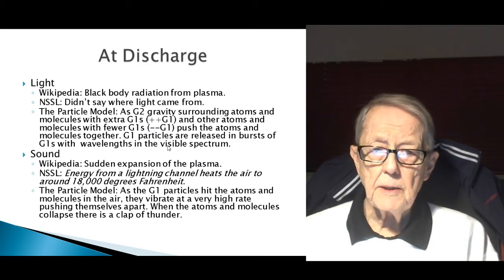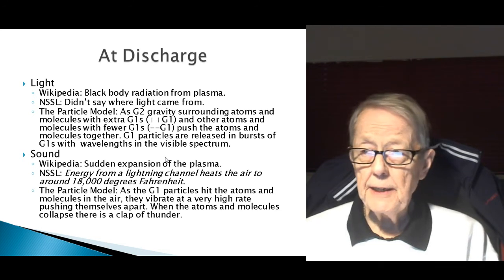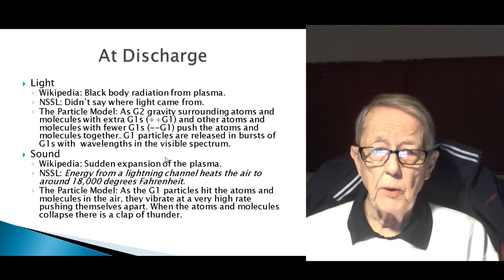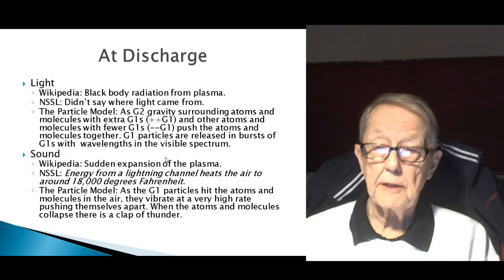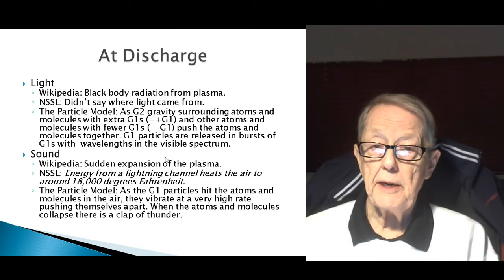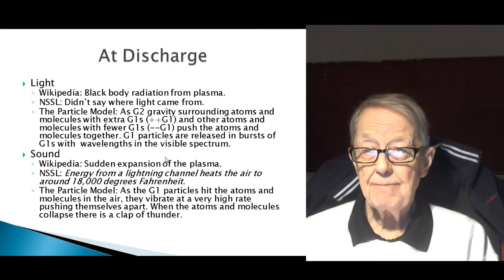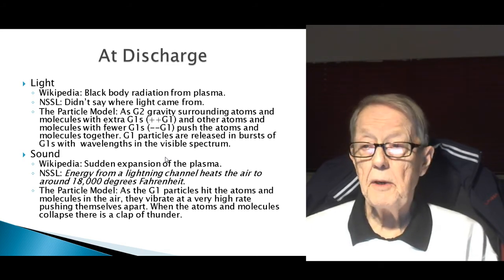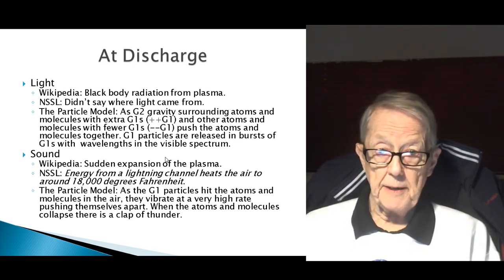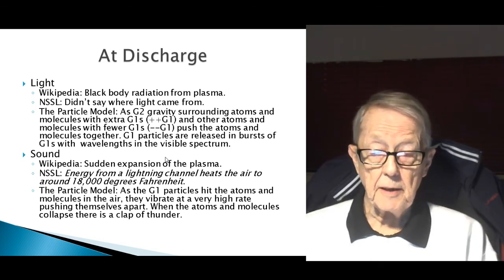So what's happening at this charge? The first thing that happens is you see it — you see the lightning. Wikipedia says light is caused by black body radiation from plasma. You have to admit, lightning does look a lot like plasma. Where the black body comes from, the National Severe Storm Laboratory didn't say.